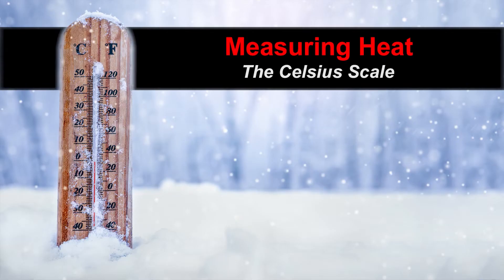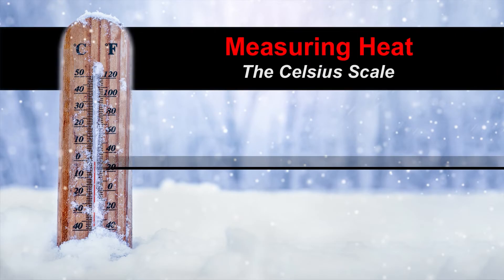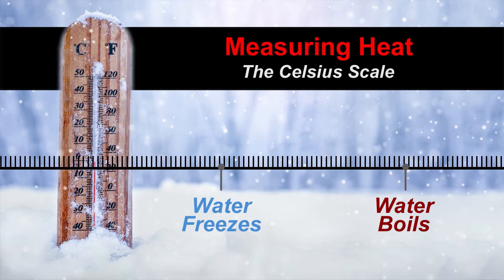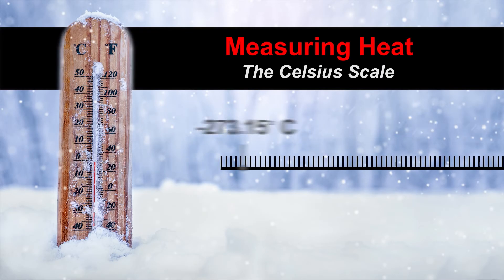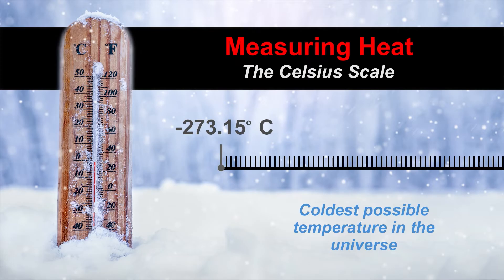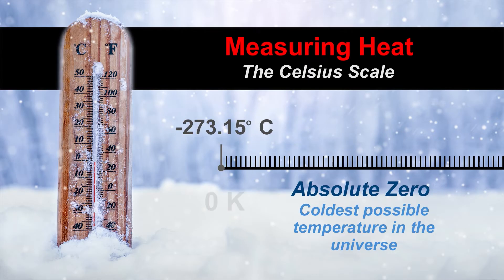If we go back to measuring heat temperature, one of the scales we use is the Celsius scale, and it is based on the freezing and boiling points of water. The temperature at which water freezes has been designated as zero degrees Celsius. The temperature at which water boils has been designated as 100 degrees Celsius. Temperatures can get a lot hotter than 100 degrees and a lot colder than zero degrees — so cold, in fact, that at minus 273.15 degrees Celsius, all atomic activity freezes. It is the coldest possible temperature in the universe, and nothing can be colder. That's why scientists call that temperature absolute zero. Back in the early 1900s, a British scientist named Lord Kelvin created a brand new scale to measure heat temperature, and it starts at absolute zero. So while absolute zero is minus 273.15 degrees Celsius, in the new scale it's zero Kelvin, and the temperatures just go up from there.